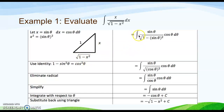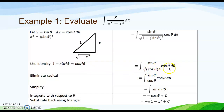Substituting, the integral becomes sine theta over the square root of 1 minus sine squared theta, multiplied by cos theta d theta. Using the identity 1 minus sine squared theta equals cos squared theta, the denominator becomes cos theta. So we have sine theta over cos theta multiplied by cos theta d theta. The cos theta terms cancel, leaving the integral of sine theta d theta.